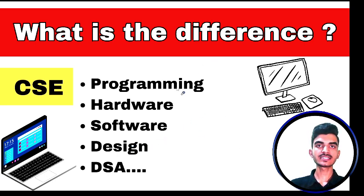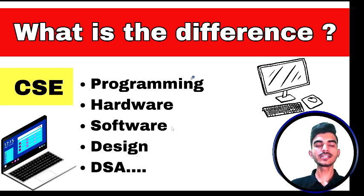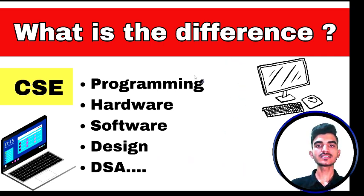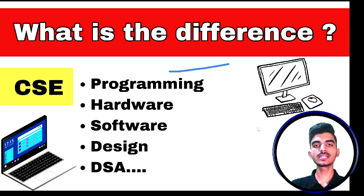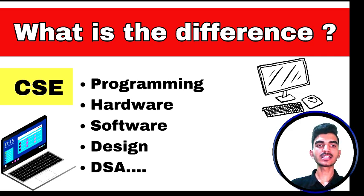If you choose computer science with data science or computer science with artificial intelligence, from the beginning itself you are very clear that you want to work in AI only. So you are open only to artificial intelligence. In core CS, you choose your specialization in your semesters, but in specialized CS you go with AI from the beginning and will have more subjects related to AI only. The same applies to cyber security, IoT, and business systems — your major subjects will be on your specialization.